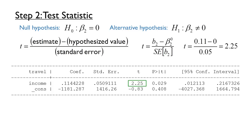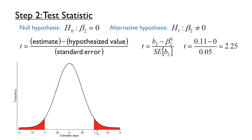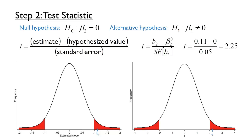One way to think about the t-statistic is that it is rescaling the sampling distribution of the parameter estimates. Under the null hypothesis, we expected a distribution of slopes centered around 0 and having a standard deviation of 0.05. If we divide each slope by the standard error, as in the formula for the t-statistic, the width of the distribution changes. If the null hypothesis contained a value other than 0, subtracting that value when computing the t-statistic would also shift the distribution to be centered around 0. This is the t-distribution, which has a very similar bell-shaped curve, and in fact the t-distribution approaches the standard normal distribution for very large datasets. Just as our estimated slope of 0.11 was in the far right tail of the sampling distribution, our calculated t-statistic of 2.25 is in the far right tail of the t-distribution.